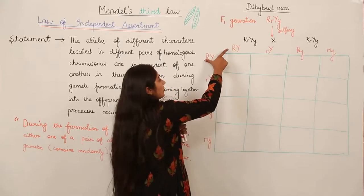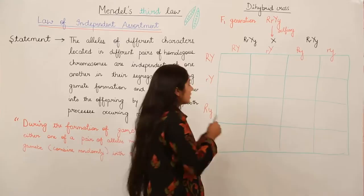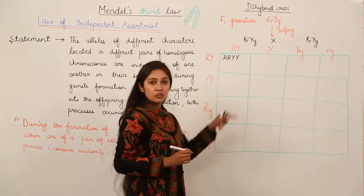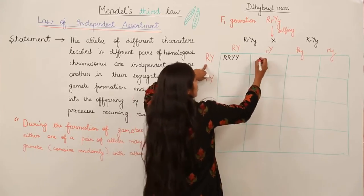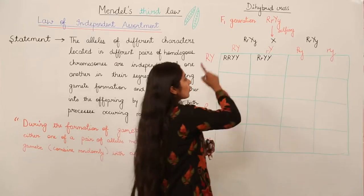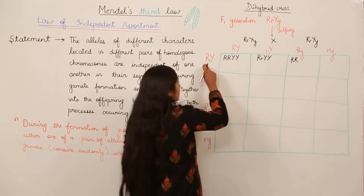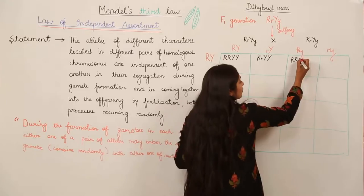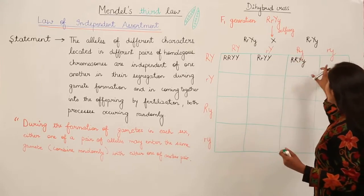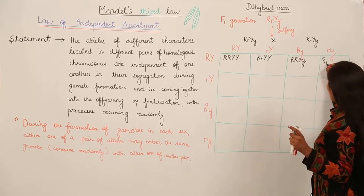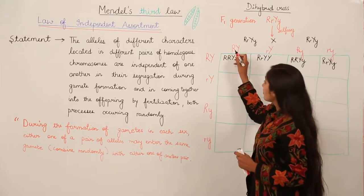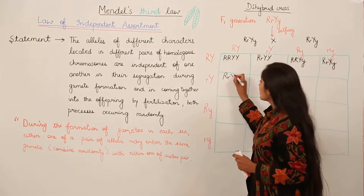We are going to combine the alleles for round or wrinkled seeds first. So we will multiply: we can have both capital R and both capital Y. Then combining with the next pair, we have one capital R, one small r, one capital Y and another capital Y. Next combination: both R are capital, one capital Y and one small y. Then capital R, small r, capital Y, small y. Moving to the fifth square: one capital R and one small r, capital Y, capital Y.